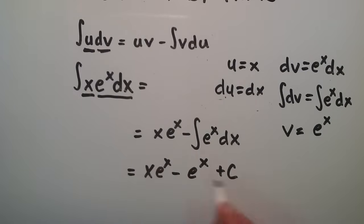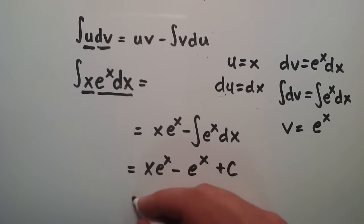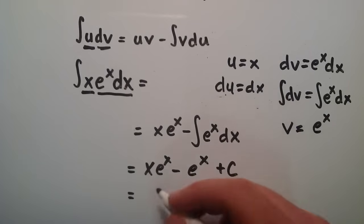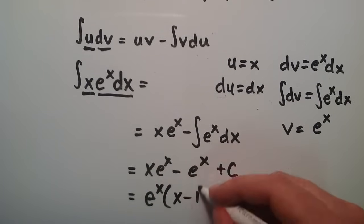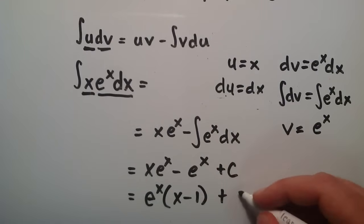This is our answer now, and we can actually simplify this a little bit. We can factor out an e to the x out of these first two terms. So this becomes e to the x times x minus 1, and then that's plus some constant.